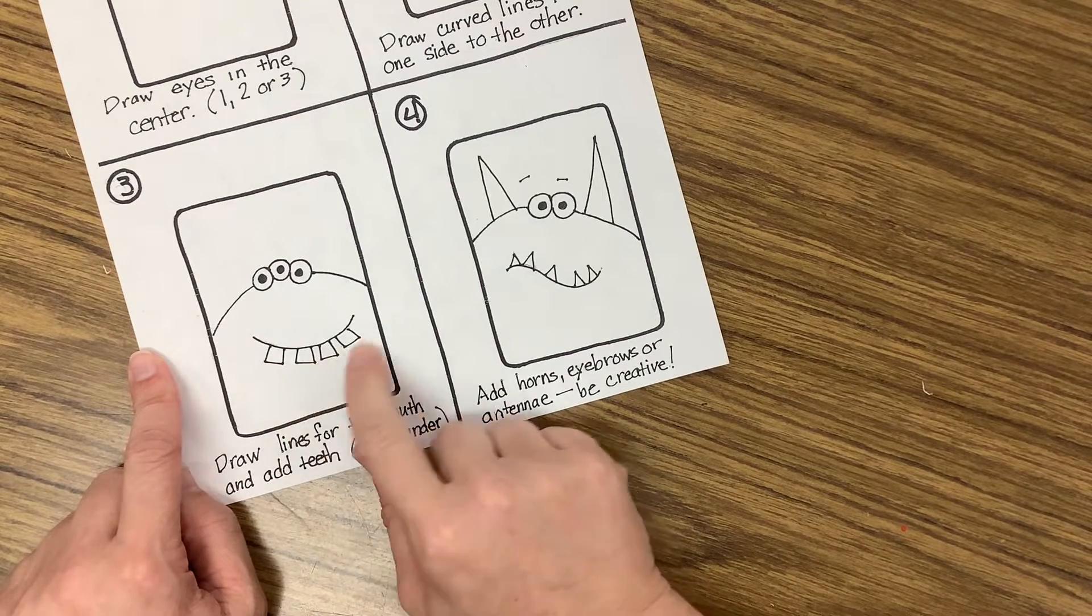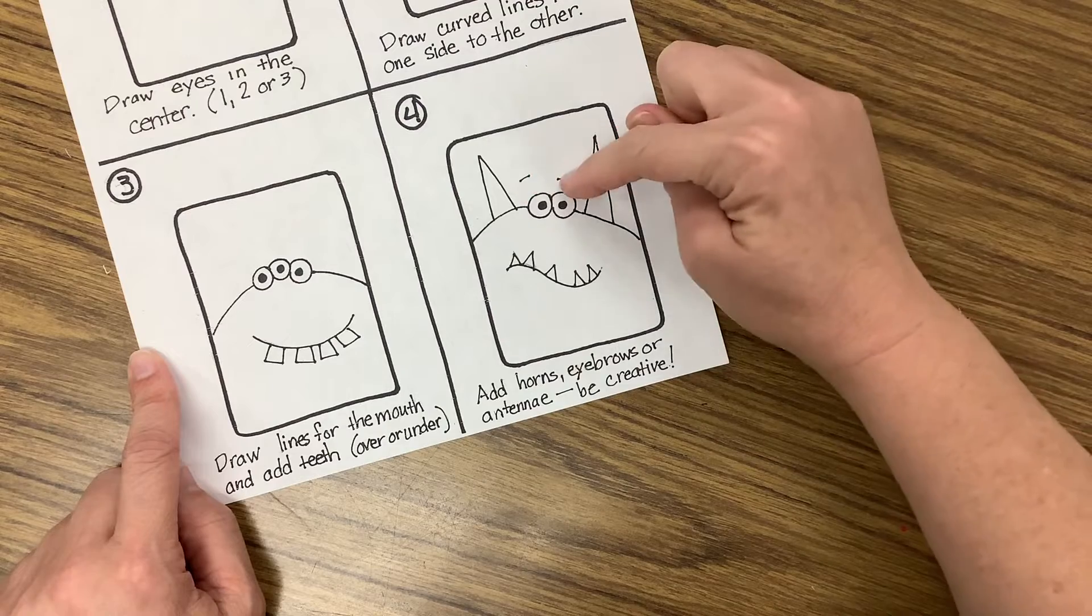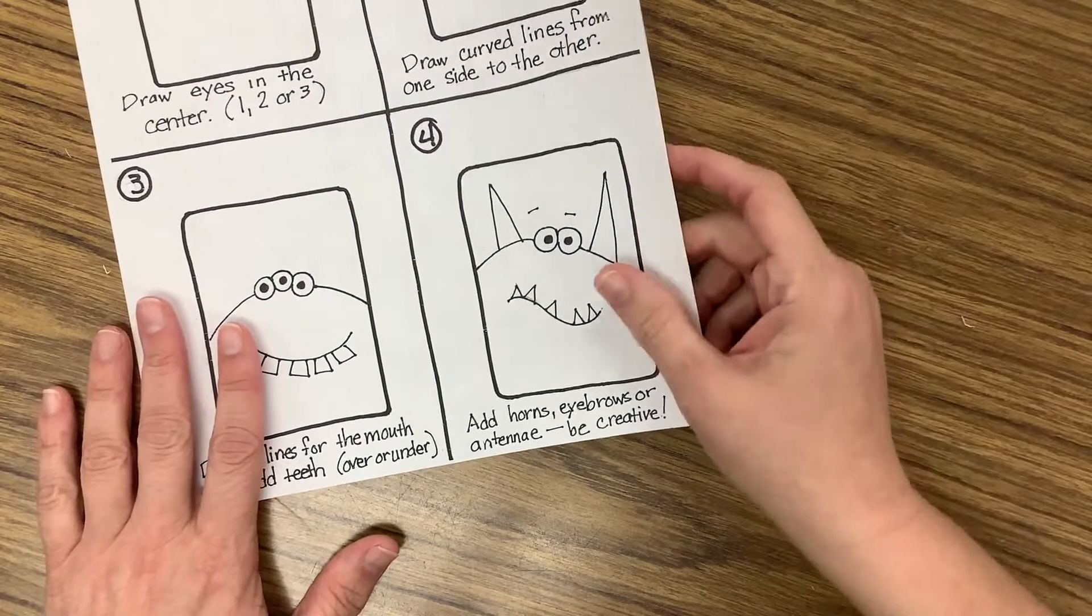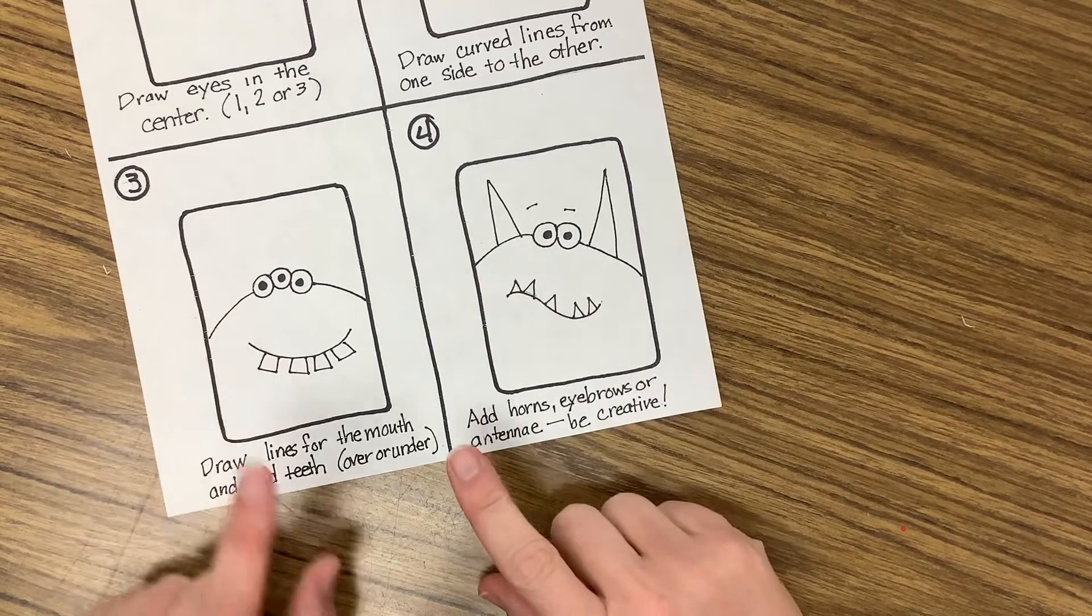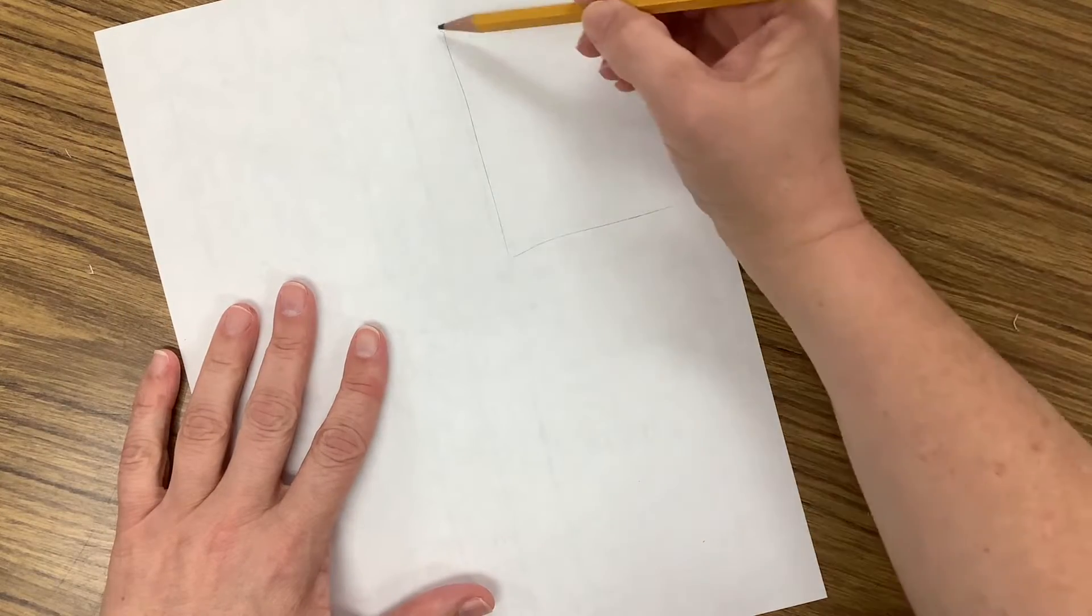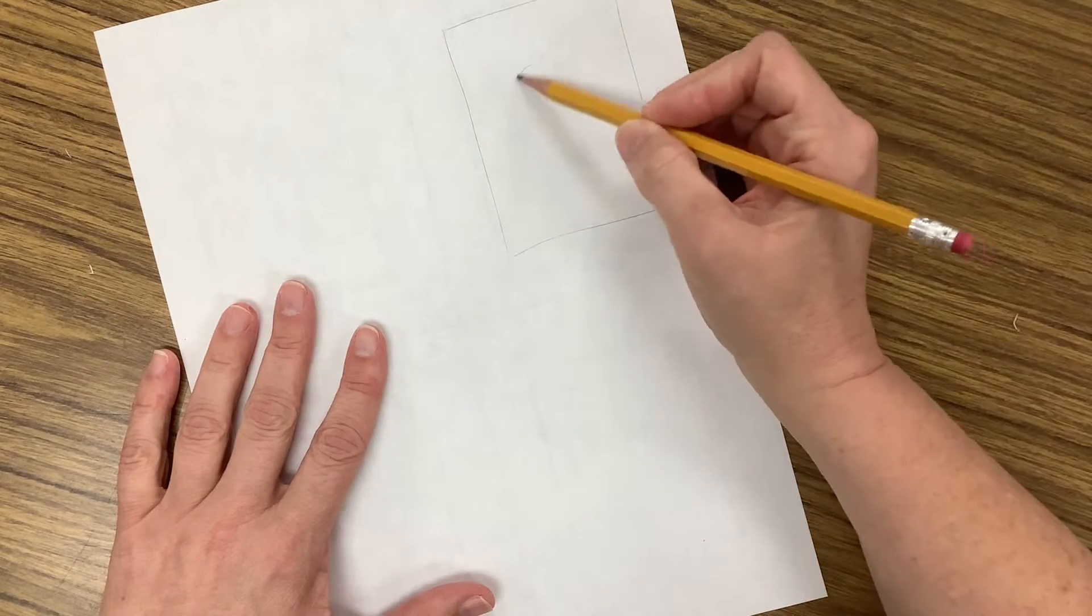You can have it below or above. You can add extra things like eyebrows, eyelashes, horns, antenna. It's really up to you. But remember, keep it simple. Keep your shapes big. So if you're drawing it, you can practice it on the back of this paper first, just to kind of sketch out a few ideas.